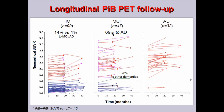The conversion rates — people moving from one category to the next — are very interesting. In the MCI group, about 70% of people will convert to meet the criteria for Alzheimer's disease within this interval, whereas 14% of healthy controls move into the MCI group.